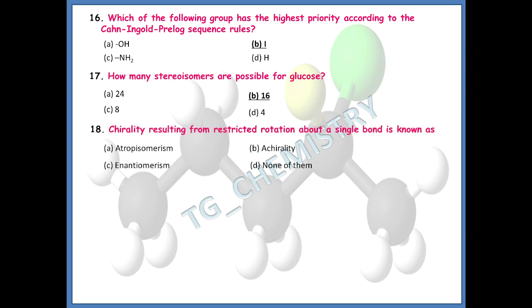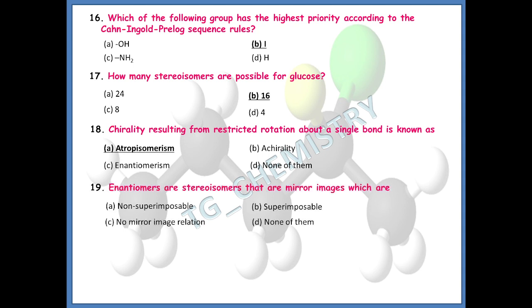The 18th question: chirality resulting from restricted rotation about a single bond is usually known as what? The right answer is option A — it is known as atropisomerism. The 19th question: enantiomers are stereoisomers that are mirror images which are non-superimposable, superimposable, or have no mirror image relation? The right answer is option A — enantiomers are stereoisomers that have non-superimposable mirror images.